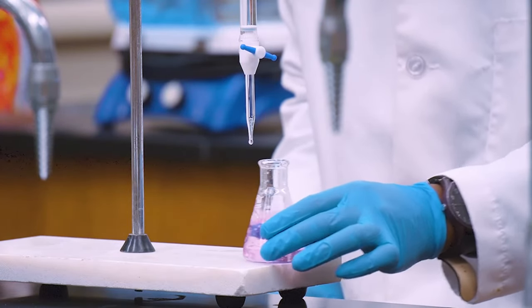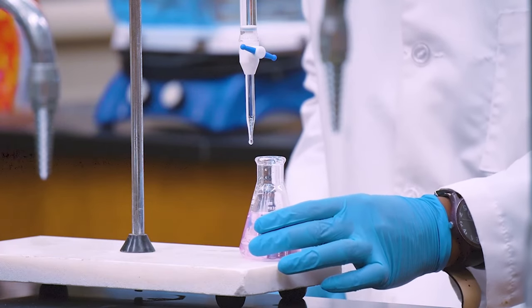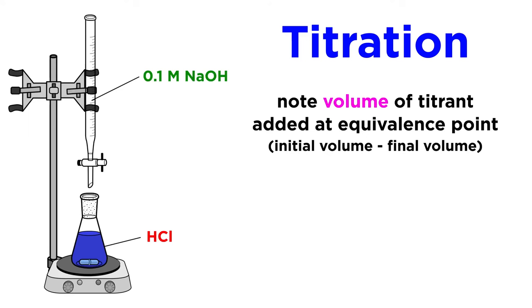As you can see, this pink color is not changing anymore, so we are at the equivalence point. Record the final volume reading on the burette and get the difference from the first reading.